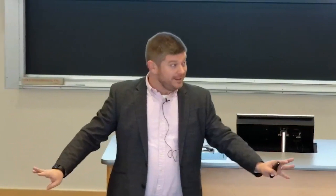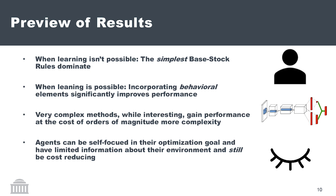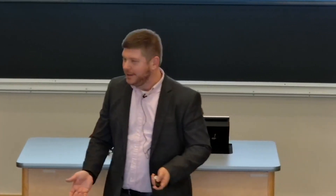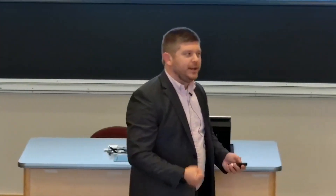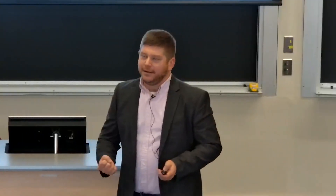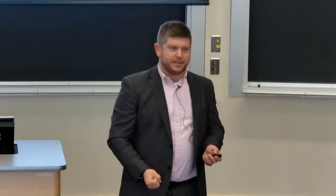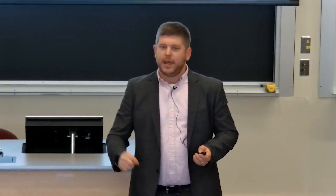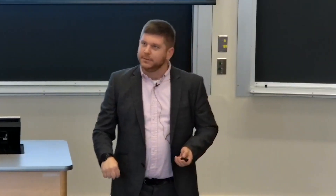Just in case the computer crashes, here are the results — this is the end, and I want to be practical. When learning is impossible, simplest rules dominate. When learning is possible, incorporating behavioral elements significantly improves performance. Complex methods work — which is fun because otherwise a lot of us would be out of a job — but they come at a cost and you have to keep that cost in mind. And finally, there are realistic circumstances in which you can have access only to your own information and still be cost-reducing within this space.